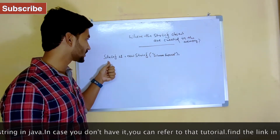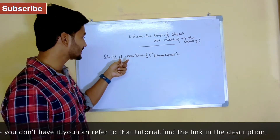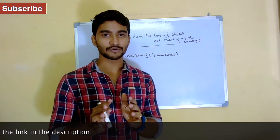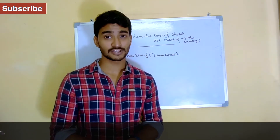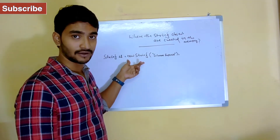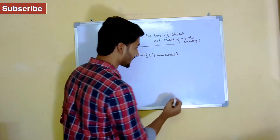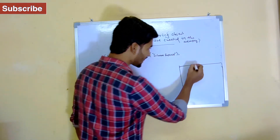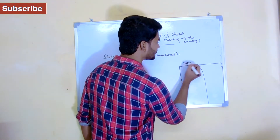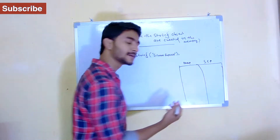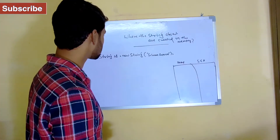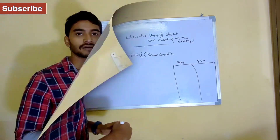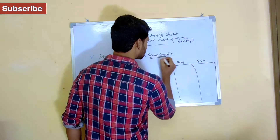I've taken the same example — I created a string called 'Selenium Express' and stored it inside the S1 reference. Let's see what happens in memory. I'm not going very deep into memory, just talking about it from the perspective of string. So let's say this is my memory — in my memory there is a heap area and there is a string constant pool, a pool of constants.